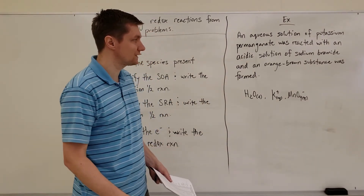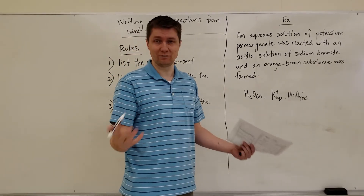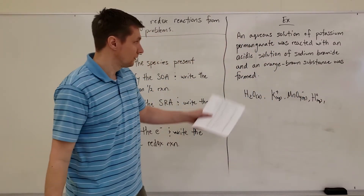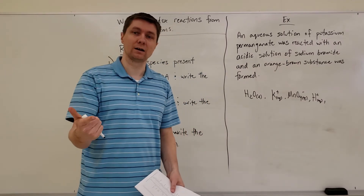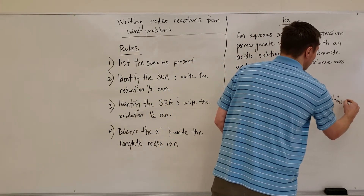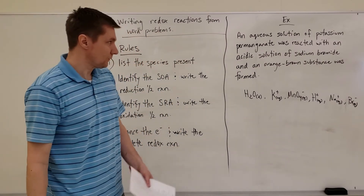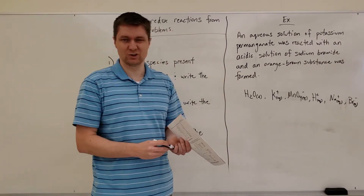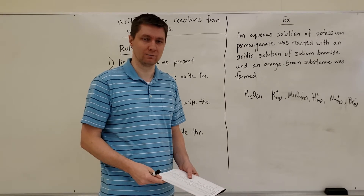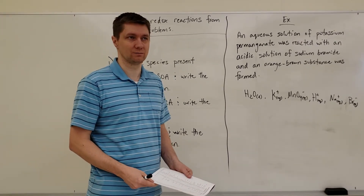Carrying on, it says the solution is acidic, meaning H⁺(aq) is present in the solution. Then it mentions sodium bromide — another ionic compound in solution — so we write it as its ions: Na⁺(aq) and Br⁻(aq). The problem also mentions an orange-brown substance was formed. This is just a hint to help you check whether you've done the reaction correctly — you don't need to have that memorized.